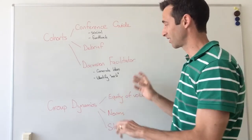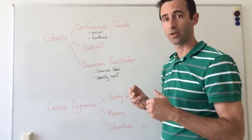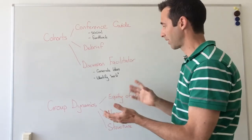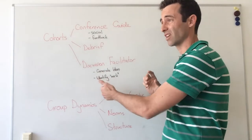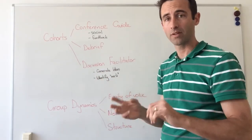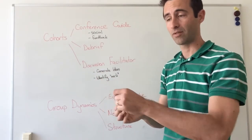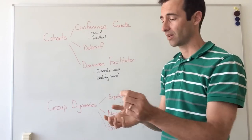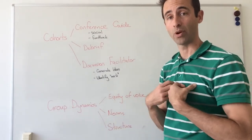An example of one of these structures is during the very first cohort meeting, I have done this whole idea of idea generation and identifying the work. The way that works is everyone just sits down, they have a bit of independent thinking time, they jot down two to three ideas of burning issues for them.